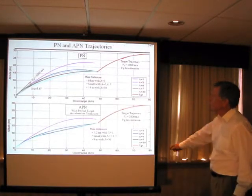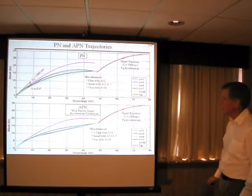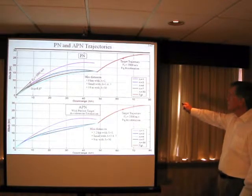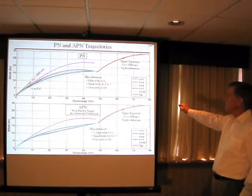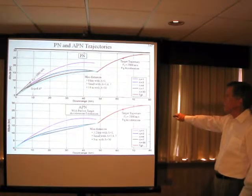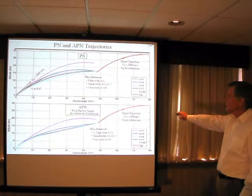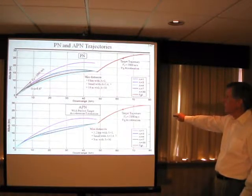We then compare this with a simpler guidance law called Proportional Navigation. In this particular chart, we evaluate against a target coming in with a velocity of 2 kilometers per second, starting at an altitude of 30 kilometers, and making a 9g acceleration turn. We see that with Proportional Navigation, we get missed distances of 6 kilometers with a particular value of the navigation ratio, and some small missed distances with larger values.